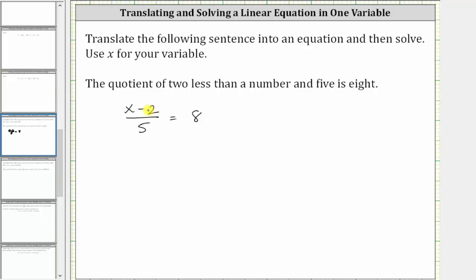We can also think of undoing the division by five by multiplying both sides of the equation by five. On the left, multiplying by five undoes the division by five.